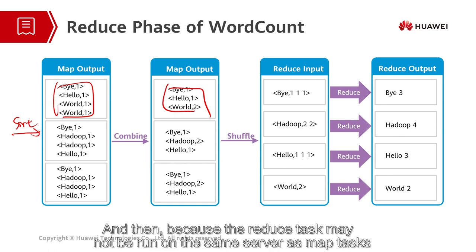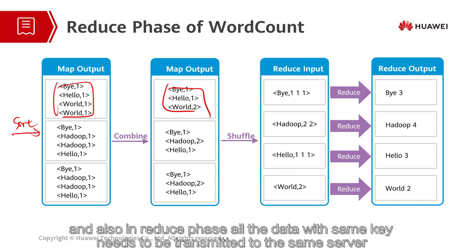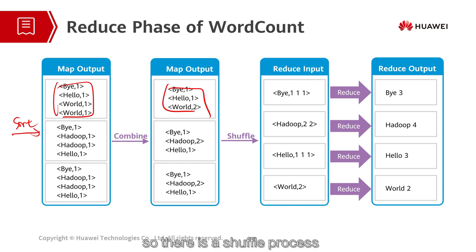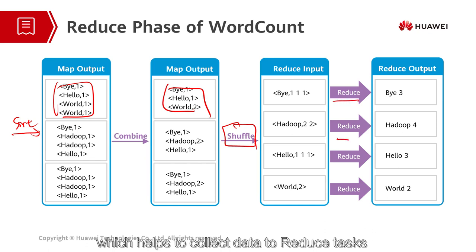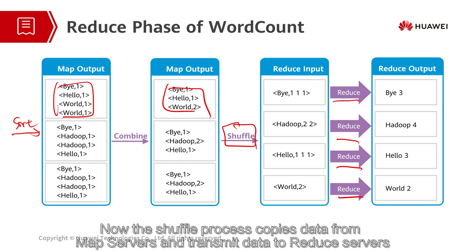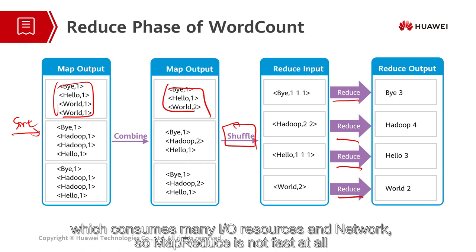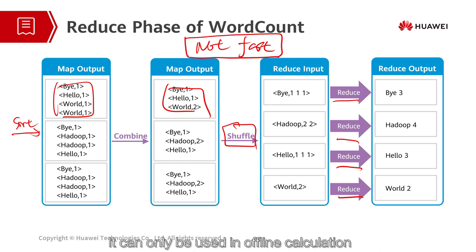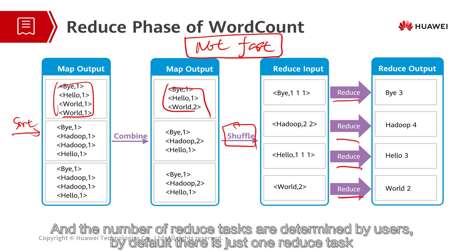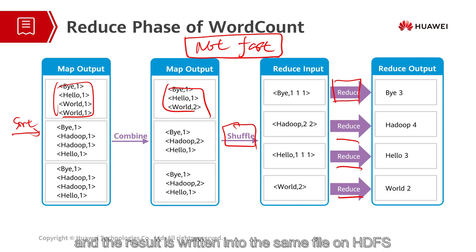Because the reduce task may not run on the same server as map tasks, and in the reduce phase all data with the same key needs to be transmitted to the same server, there is a shuffle process which helps to collect data for reduce tasks. The shuffle process copies data from map servers and transmits it to reduce servers, which consumes many I/O and network resources. So MapReduce is not fast at all and can only be used in offline calculations. The number of reduce tasks is determined by users; by default there is just one reduce task, and the result is written into the same file on HDFS.